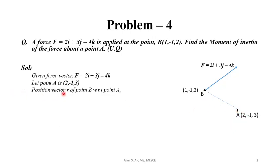That will be R. R is calculated as (B_x - A_x)i + (B_y - A_y)j + (B_z - A_z)k. That is, (1 - 2)i + (-1 - (-1))j + (2 - 3)k.